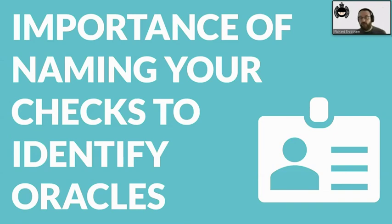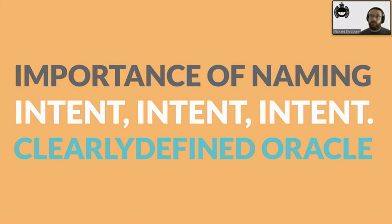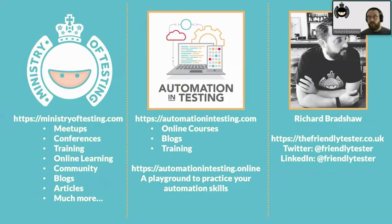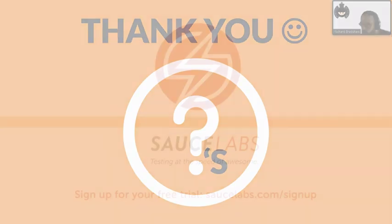The final section: the importance of naming your checks to identify oracles. Intent, intent, intent. The name of your automated checks needs to clearly define your intent, because otherwise if someone else inherits it, they're going to look at your oracle to work out whether the test needs changing or not. But if you've clearly defined what you were trying to do — I was trying to test that the next training was on there — then that is the clear intent. Make sure your oracle is clearly defined. I'll share the slides with SourceCon. You can find more information and I might have time for a single question — please post questions on Slack and I will get back to them after the talk. Thank you.